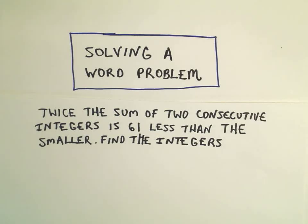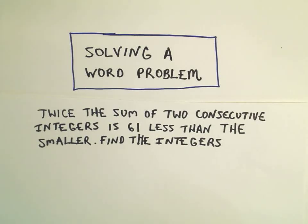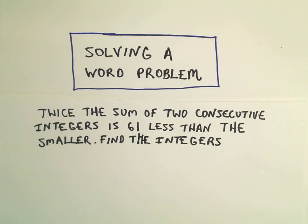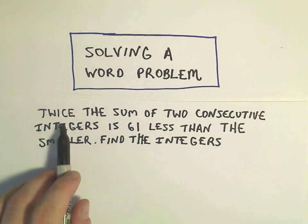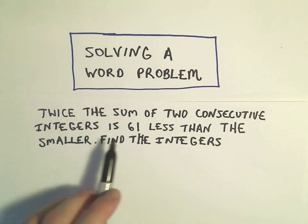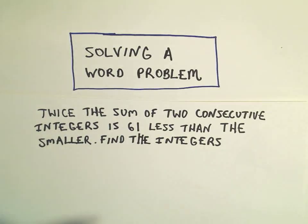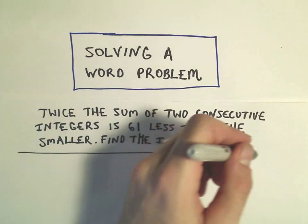Alright, in this video I want to do an example of a word problem involving consecutive integers. In this case our integers are going to have to fulfill some requirement, namely that twice the sum of those two integers is going to be 61 less than the smaller.